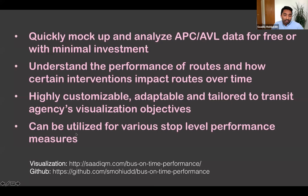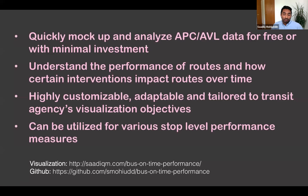In conclusion, using open source software allows us to quickly mock up and analyze APC and AVL data for free or with minimal investment. We can understand the performance of routes and how certain interventions impact routes over time. This creates a highly customizable, adaptable application tailored to transit agencies' visualization needs — for internal analysis, public engagement, or communications. It can be used for various top-level performance measures. Links to the visualization demo and GitHub source code are available on the last slide.